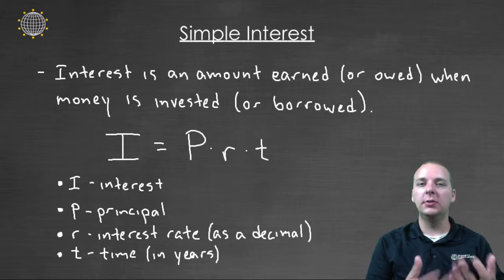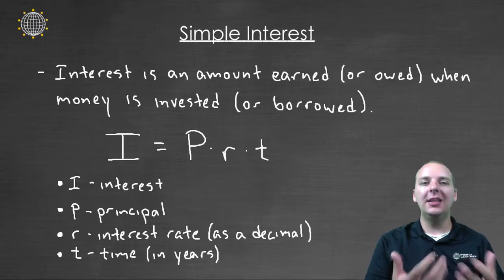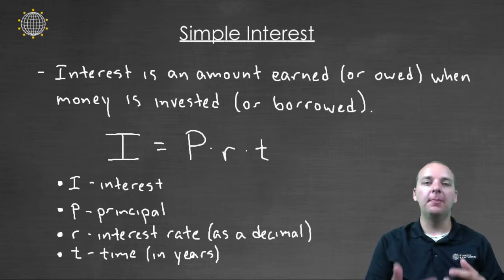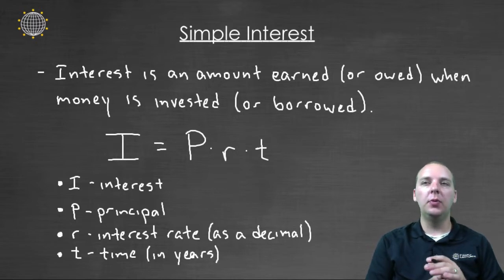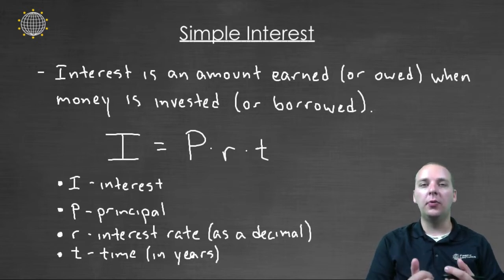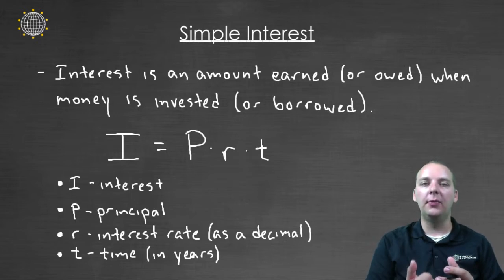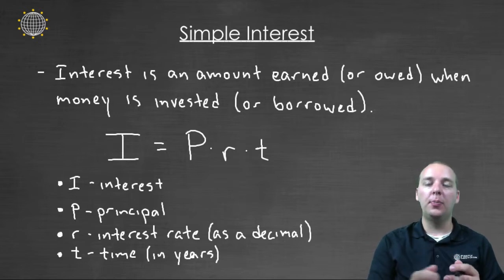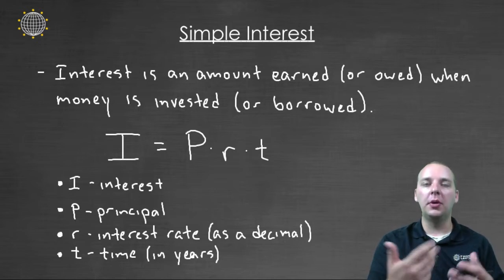A popular real-life application that uses percentages a lot is in computing interest. Interest is an amount of money that either you earn if you've invested some money, or that you owe someone if you've borrowed money. For example, if you buy a car and you don't have cash to pay for it, you can go to a bank and get a loan. The bank is not going to let you hold on to that money for free, so you'll pay them back the full price you borrowed plus interest — an amount you owe them for borrowing money.